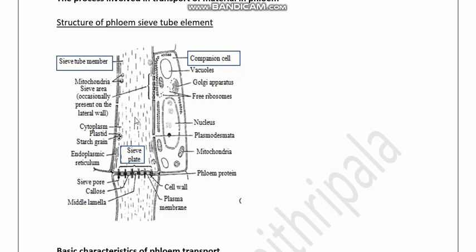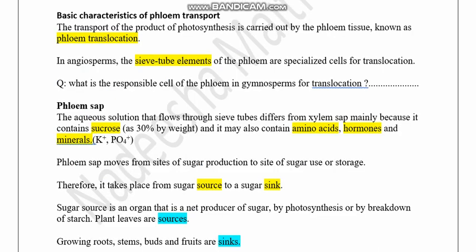Phloem sap can be easily moved from one sieve tube element to the next sieve tube element via this sieve plate by using the bulk flow method. The companion cell is adjacent to the sieve tube element and it is very important for the survival of the sieve tube element. Phloem translocation is the transport of products of photosynthesis through the phloem tissue.